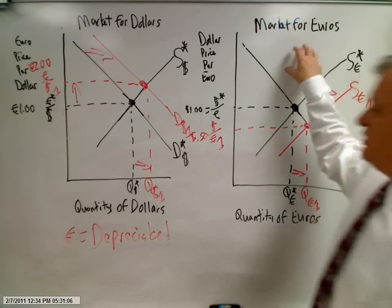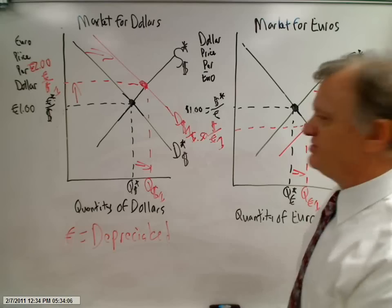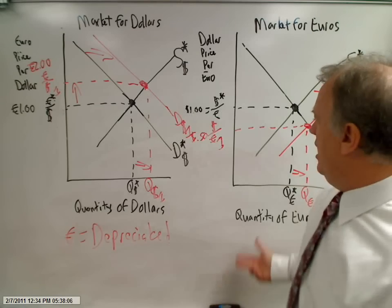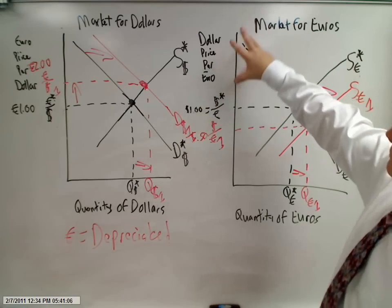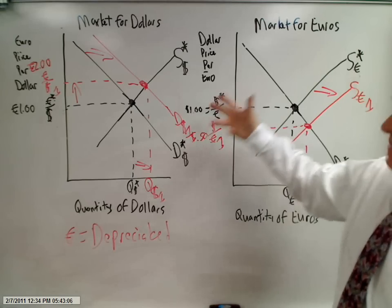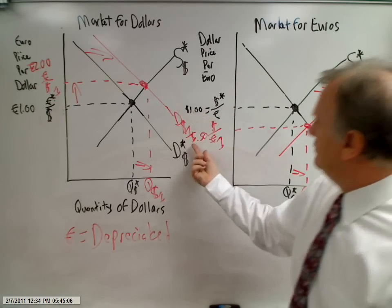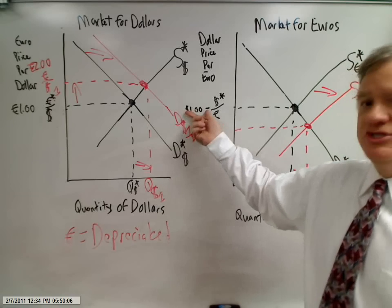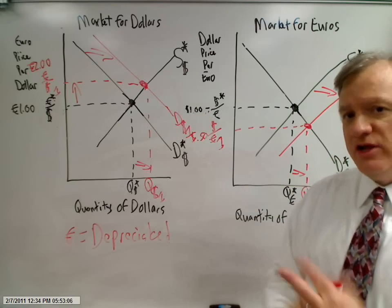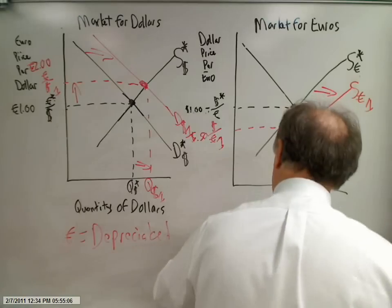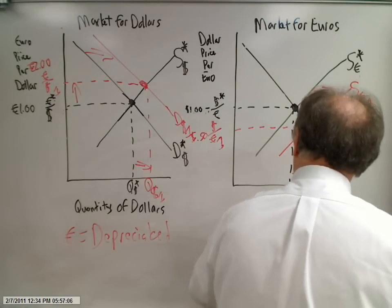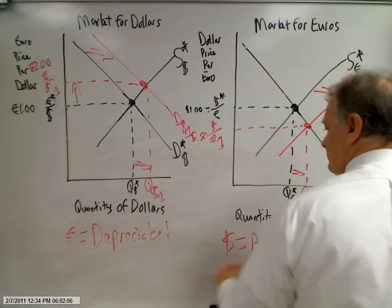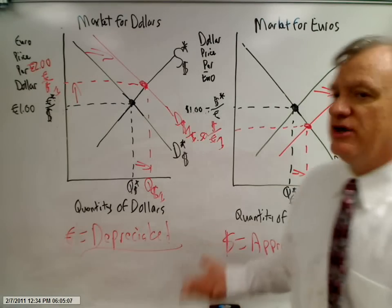Now let's go back to the market for euros. After this interest rate effect took place and affected people with big money, how did it affect the price of European stuff or my ability to buy euros? Well, it got to be a better deal — I only have to give up 50 cents to buy a euro as opposed to a dollar. So from the dollar perspective, the dollar has appreciated relative to the euro.